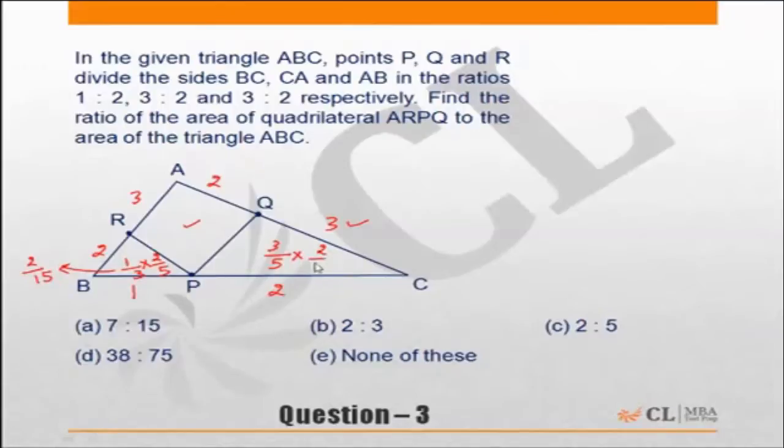So in this case it is 2, 2 by 5. Here 2 by 15. So 2 by 15 plus 2 by 5 is going to be 8 by 15. So 8 by 15 is this area plus this area.